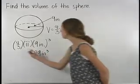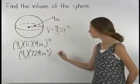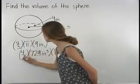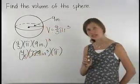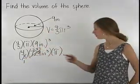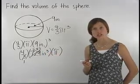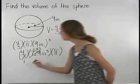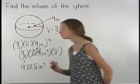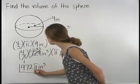So we have 4 thirds times 729 inches cubed times pi. Notice that we can cross cancel 3 and 729 to 1 and 243. So we have 4 times 243 inches cubed, which is equal to 972 inches cubed. So we have 972 pi inches cubed. So the volume of the sphere shown here is 972 pi inches cubed.